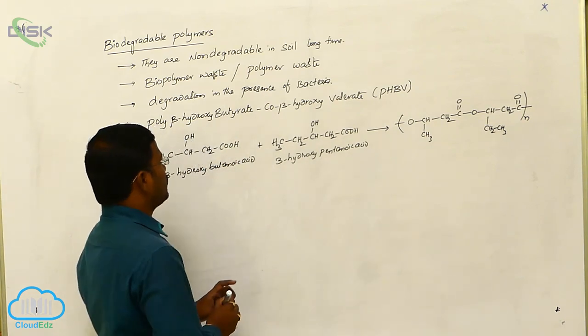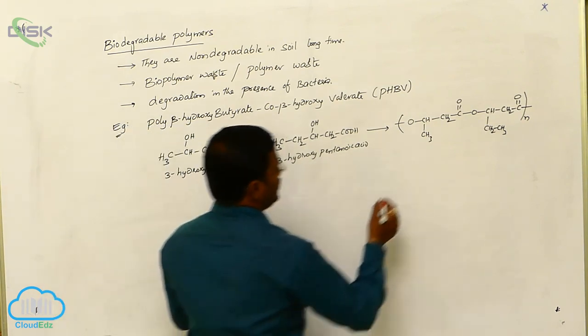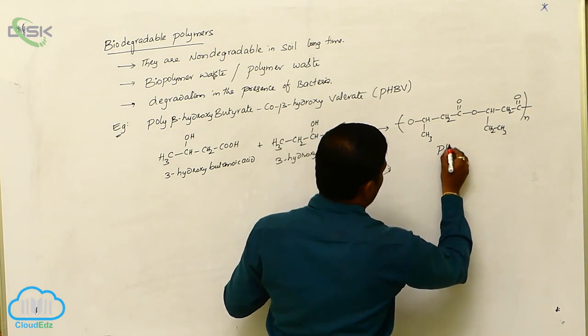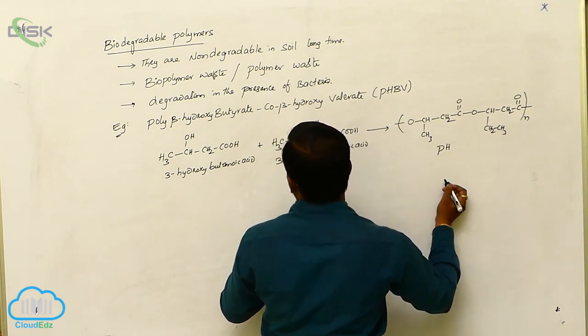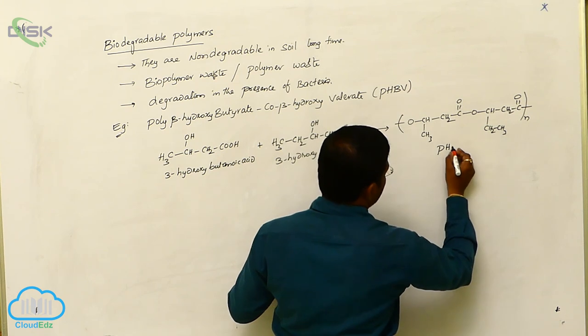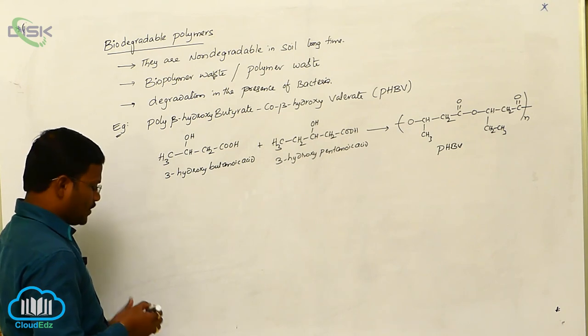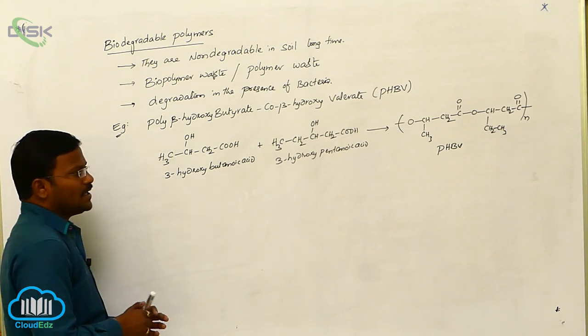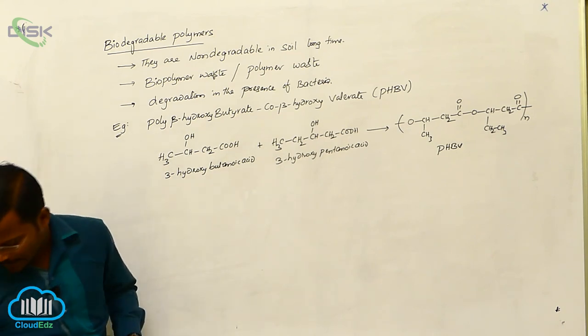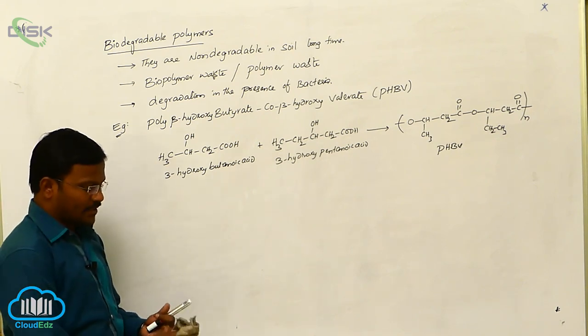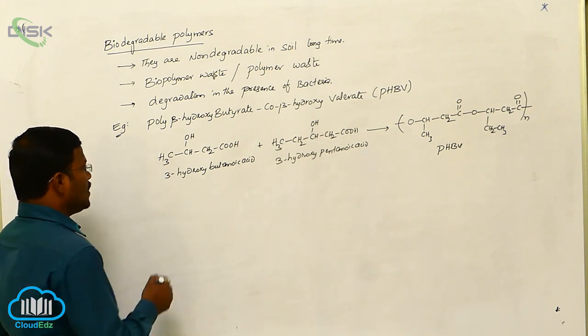The resulting compound is called PHBV, poly-beta-hydroxybutyrate-co-beta-hydroxyvalerate. It is a biodegradable polymer which can easily undergo degradation in the presence of bacteria present in soil or earth crusts.